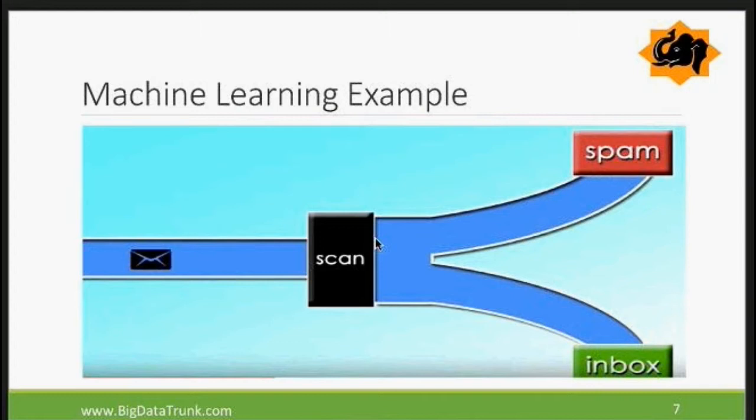Here is a quick example of machine learning. We have been dealing with this since we got email. The day we got an email account, we started getting spam from all kinds of people. But over a period of time, if you look at your spam folder, the percentage of spam you're getting has reduced drastically over the years. Why? That's purely machine learning techniques.